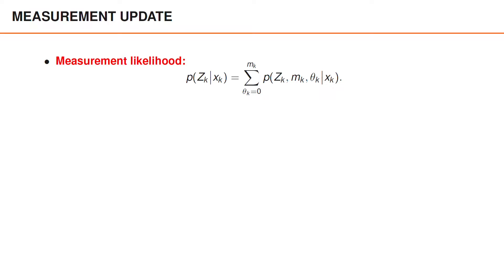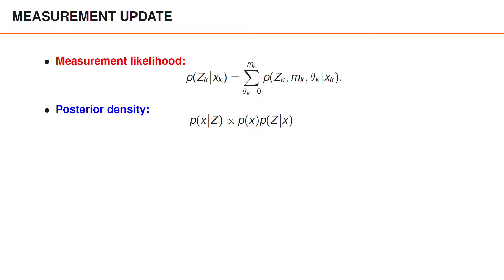To derive the update equations, we recall the expression for the measurement likelihood, which contains m_{k+1} terms. For now, we ignore the details in the expressions for the individual terms, and simply write the likelihood as a sum over theta_k from 0 to m_k. To simplify notation, we remove the time index from the variables. Please recall that z are the measurements at a single time instance, and that theta are the corresponding data association hypotheses.